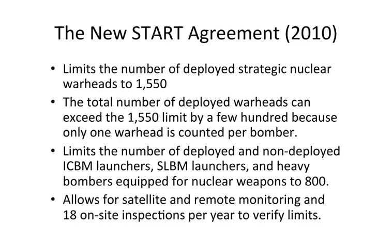The New START Agreement is the most recent of these bilateral US-Russian agreements. The treaty limits the number of deployed strategic nuclear warheads to 1,550, except the number of deployed warheads can exceed this limit by a few hundred, because only one warhead is counted per bomber. Bombers can carry more than one warhead, so they put in a fudge factor into the treaty negotiation. The treaty also limits the number of deployed and non-deployed ICBM launchers, SLBM launchers, and heavy bombers — collectively, both countries can only have 800.